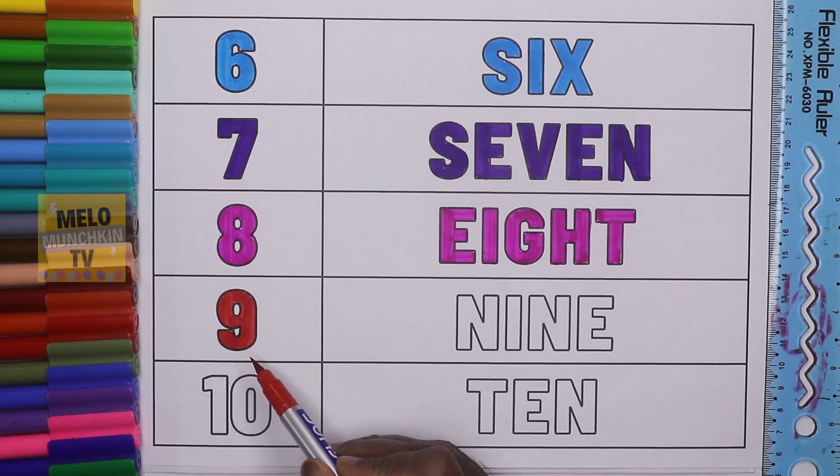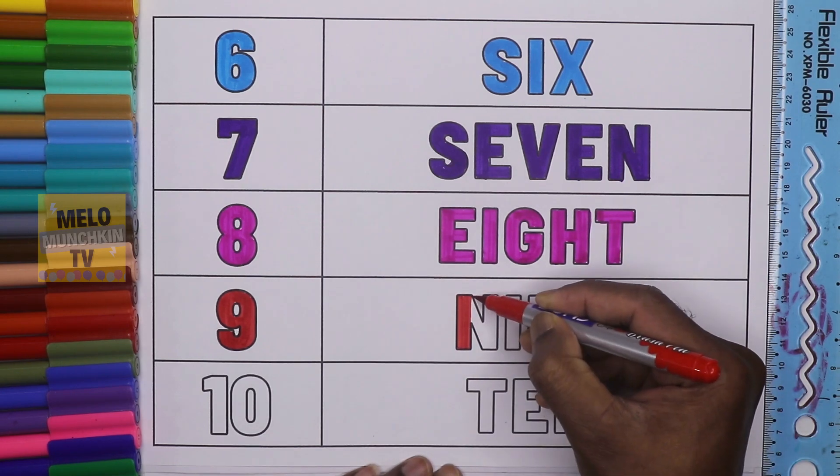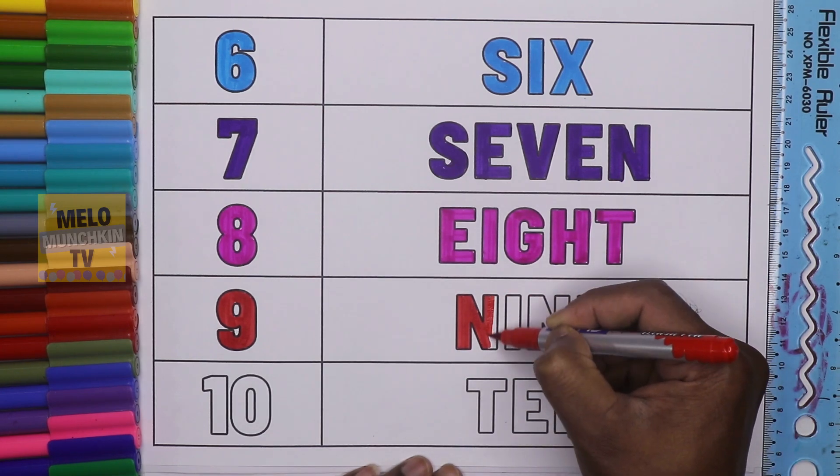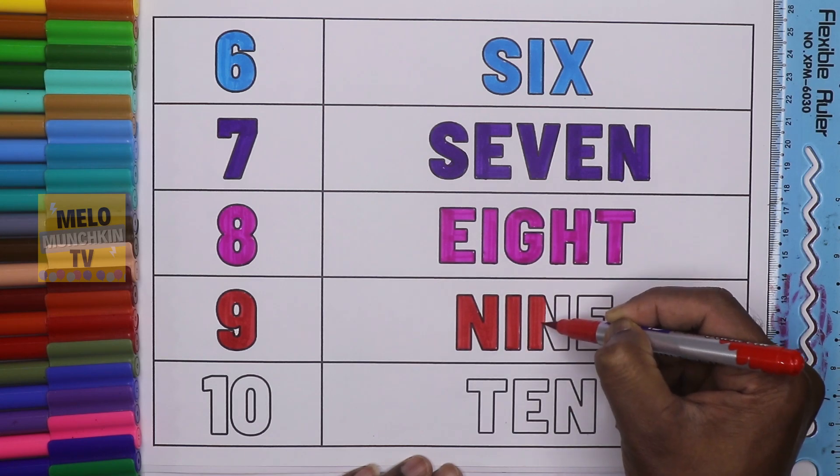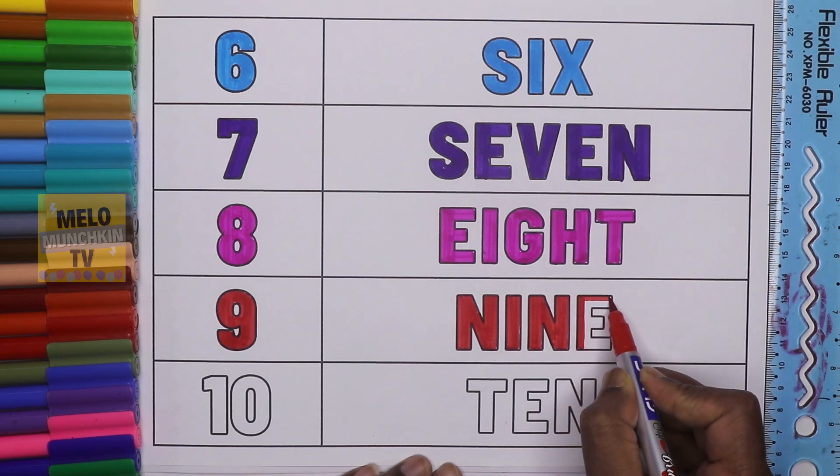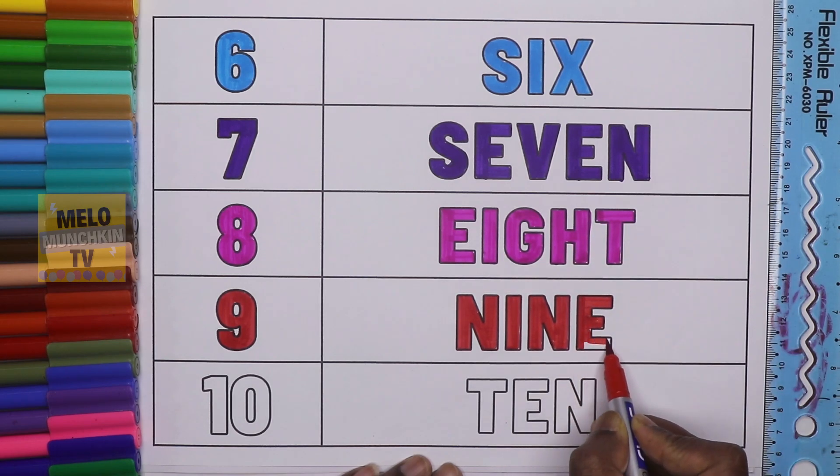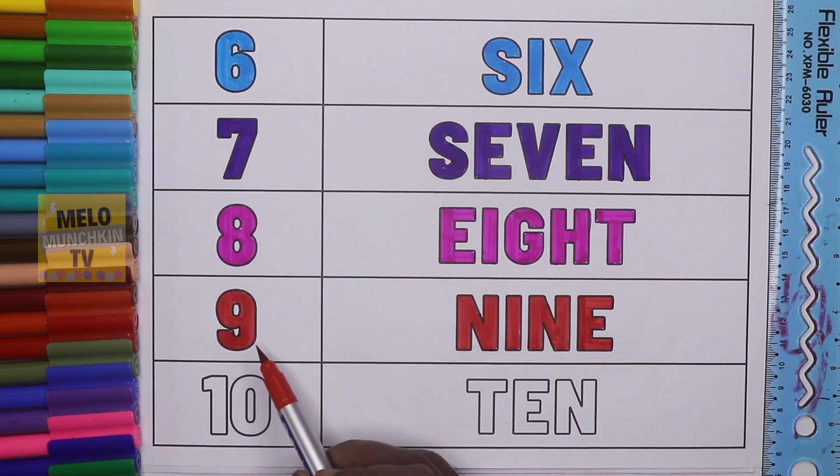And what is the spelling of nine? Let's see. N-I-N-E. So nine. Let's repeat the spelling. N-I-N-E. Nine.